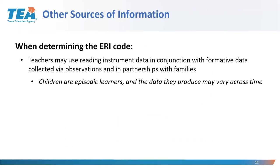When determining the ERI code, teachers can use reading instrument data in conjunction with formative data, observations, and partnerships with families. Children are episodic learners and the data they produce may vary — a student may have had a bad day, or as we jokingly say, they might have gotten lucky guessing.